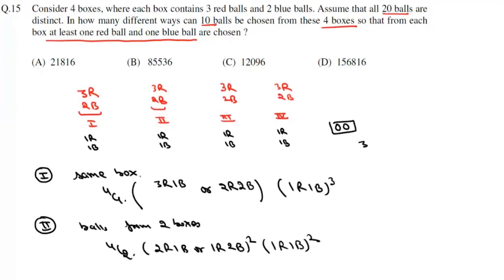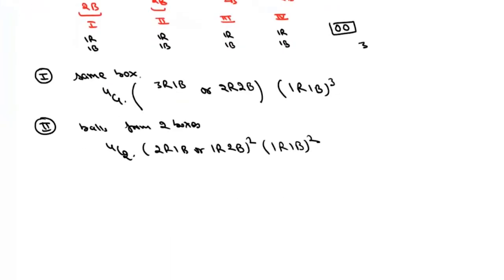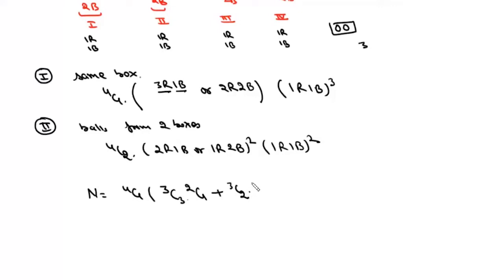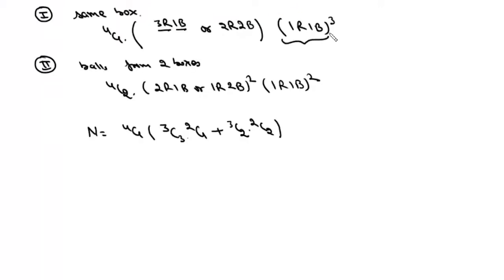Total number of ways n is given by: 4C1 times [(3C3 × 2C1) + (3C2 × 2C2)] for the chosen box, times (3C1 × 2C1) cubed for the remaining 3 boxes, plus 4C2 for Case 2.